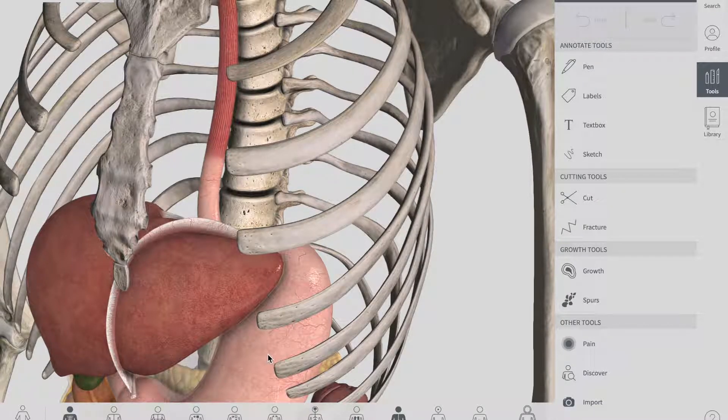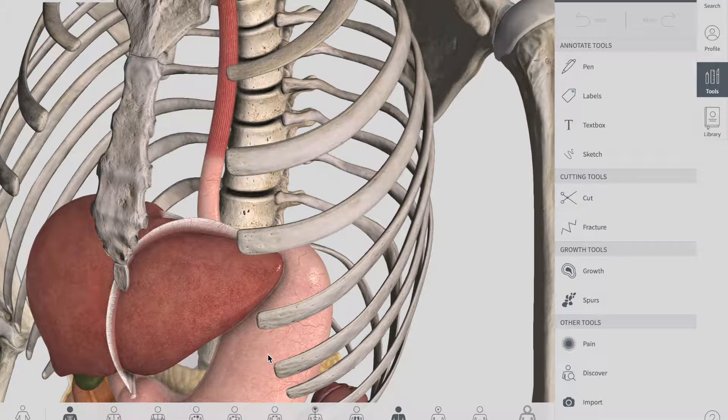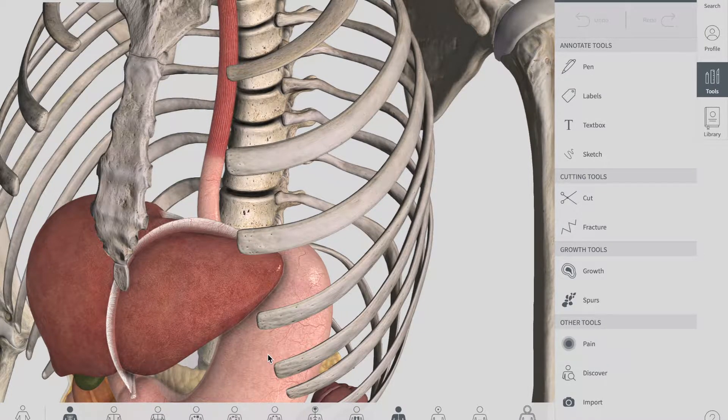That's why during esophageal peristalsis, the sphincter is relaxed to allow food to enter the stomach. Otherwise, at rest, the function of the sphincter is to prevent the reflux of acidic gastric contents into the esophagus.